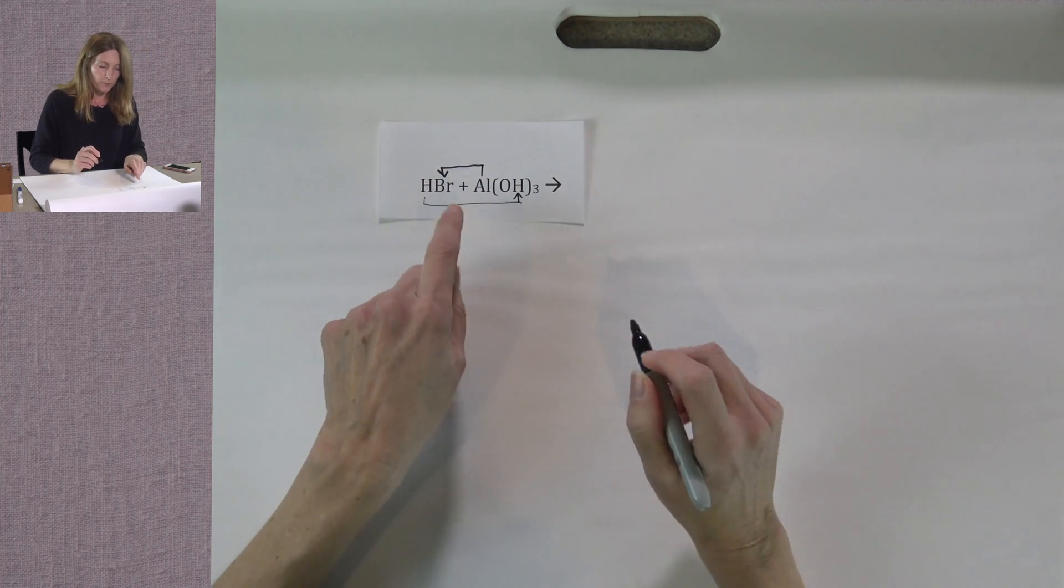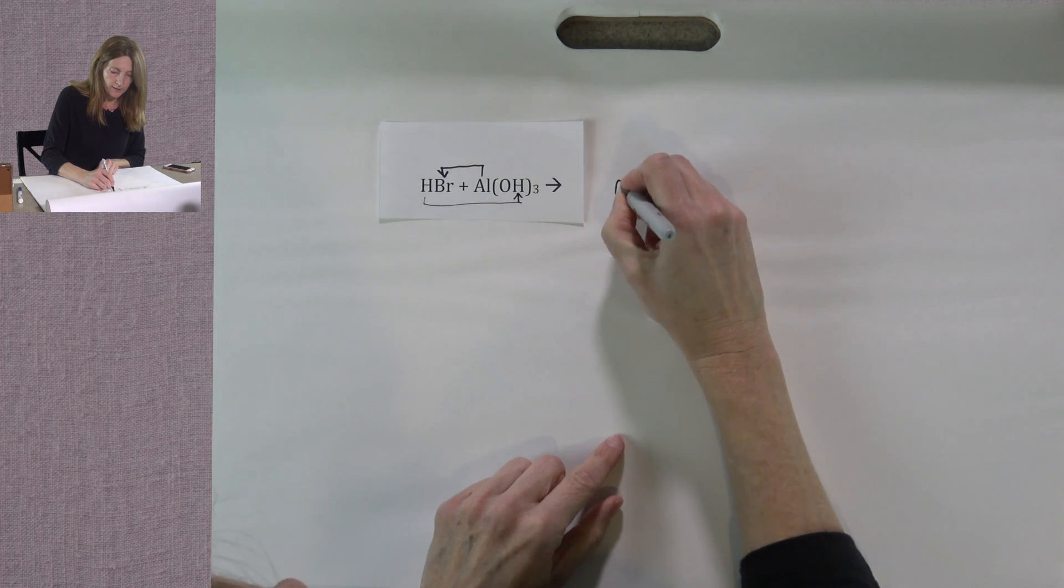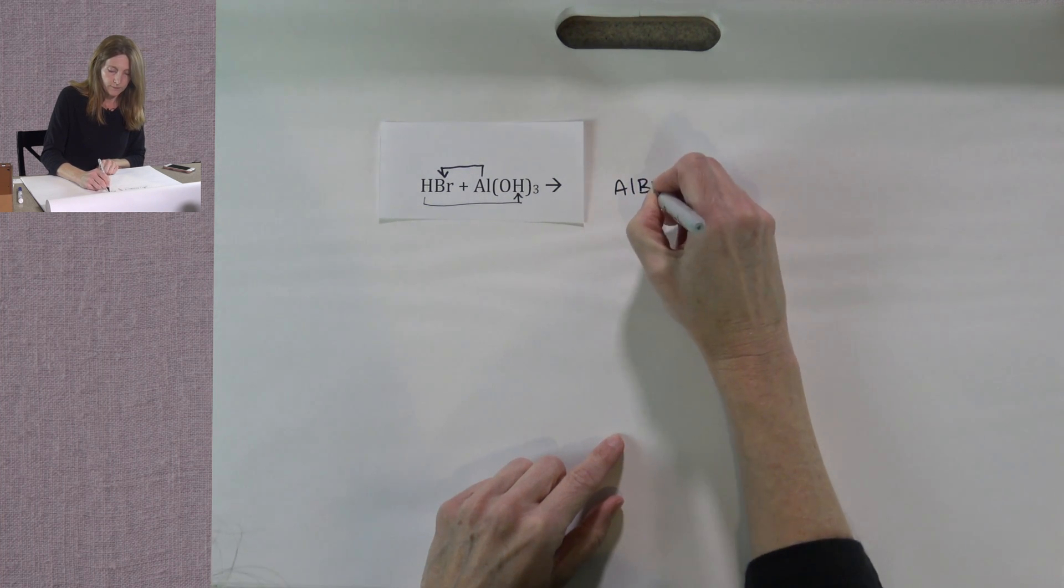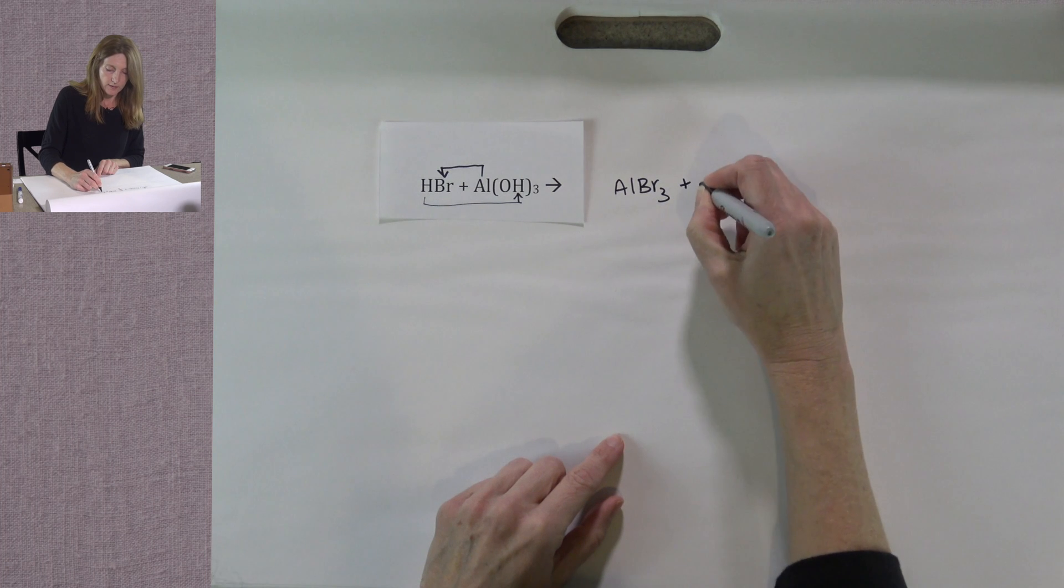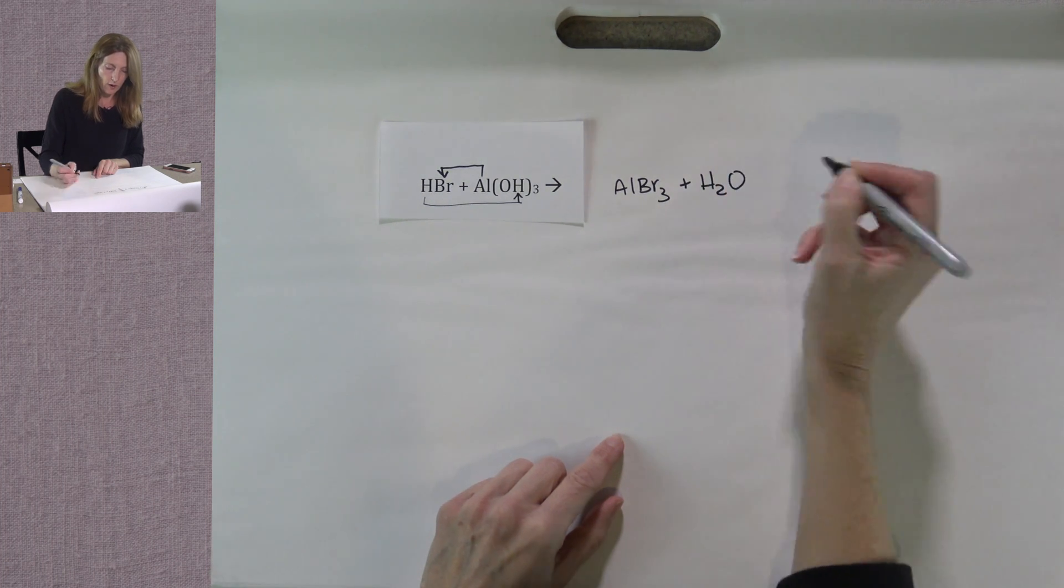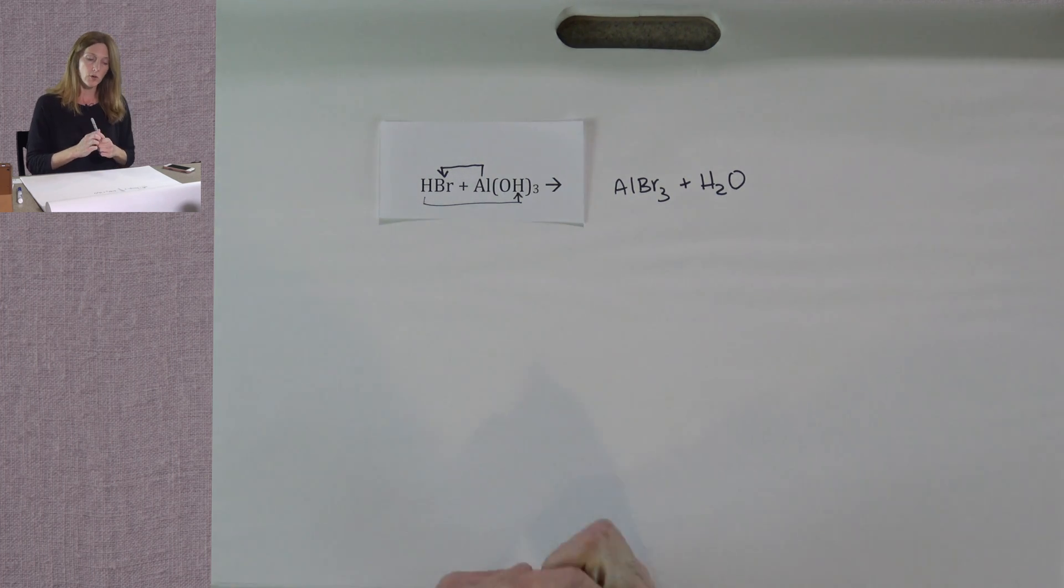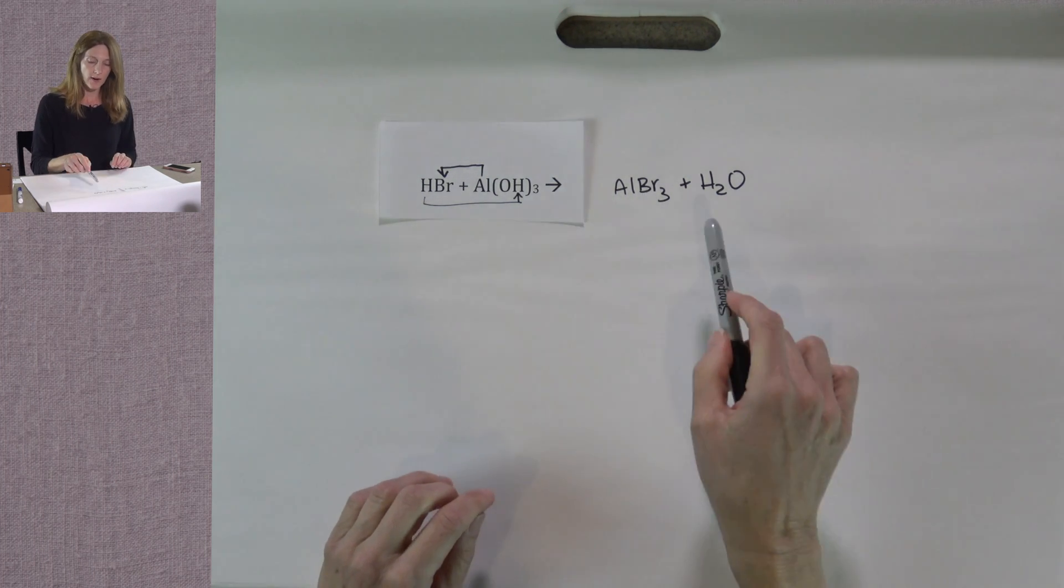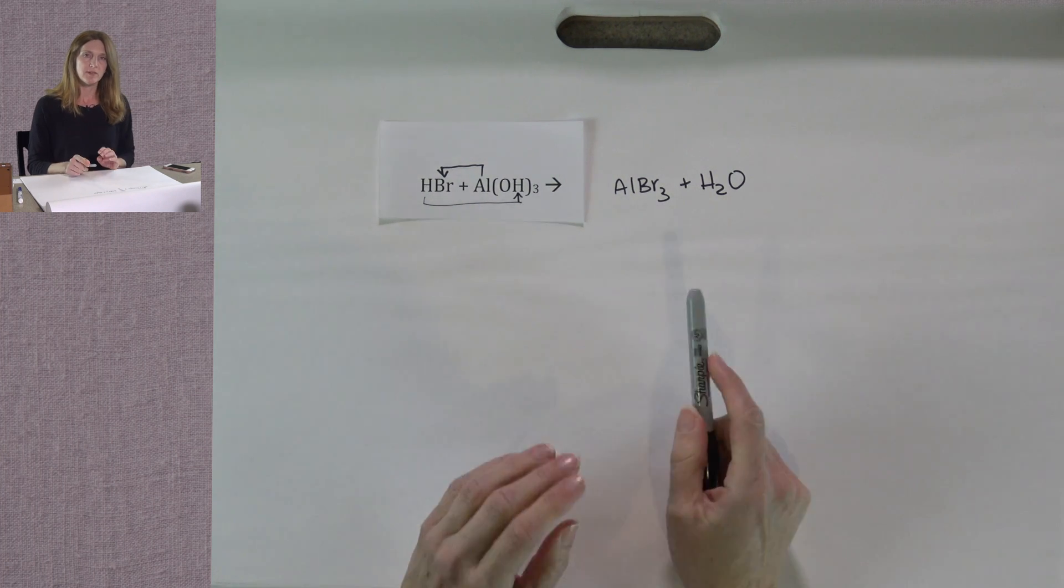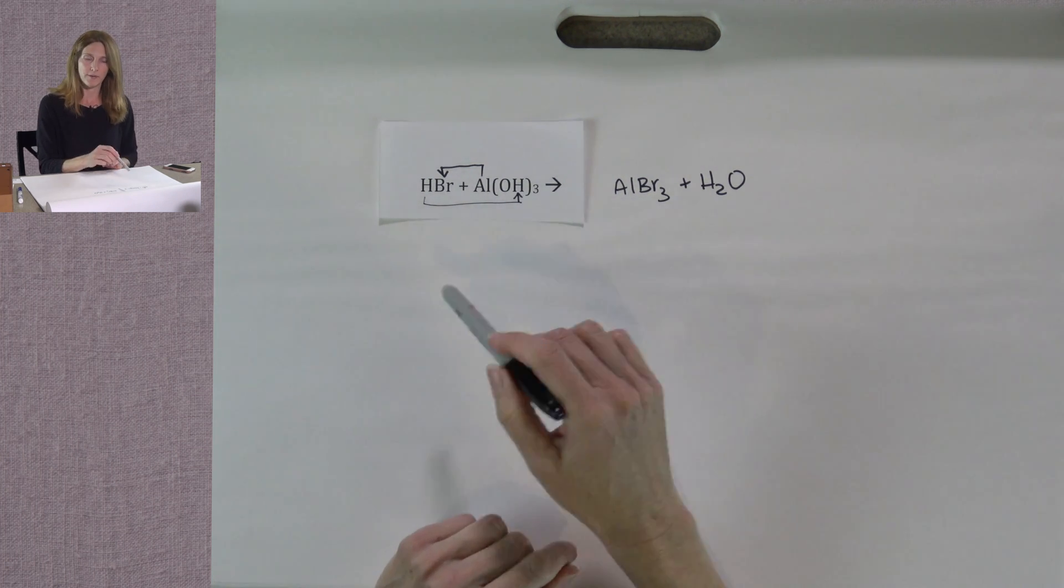So we will produce aluminum bromide and H2O. Again, we have an ionic compound and water. Technically, we could balance this equation after writing the products, but for simplicity in this video, I'm not going to balance them at this time.